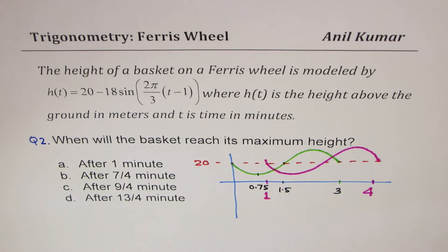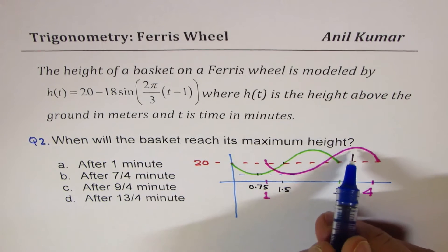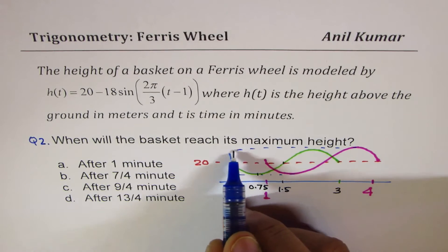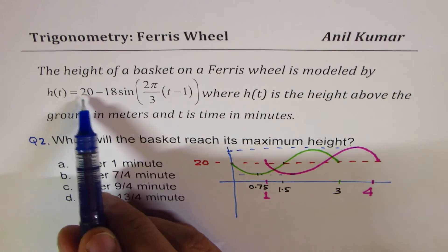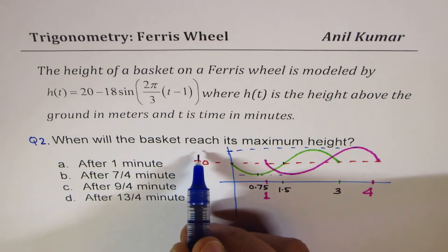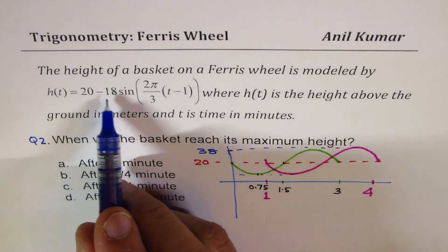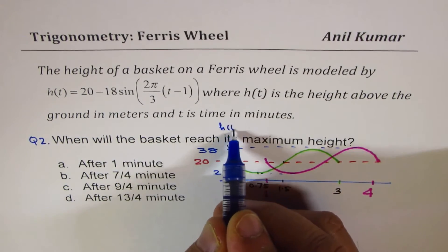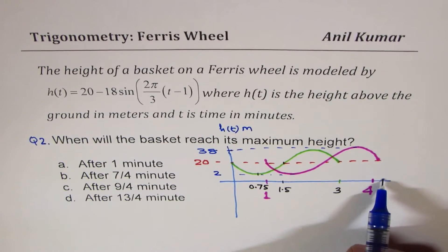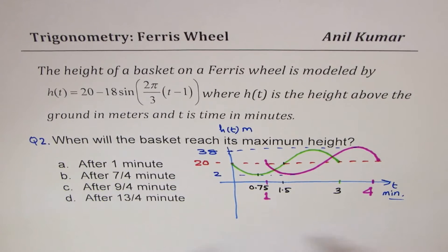Let's figure out what is the maximum and minimum for this. Now, this particular sketch is going to help us answer all other questions also. The maximum will be 20 plus 18, which is 38. And the minimum is going to be 20 minus 18, which is 2. The units are in meters. So we'll write h(t) in meters. Here, we have time in minutes.